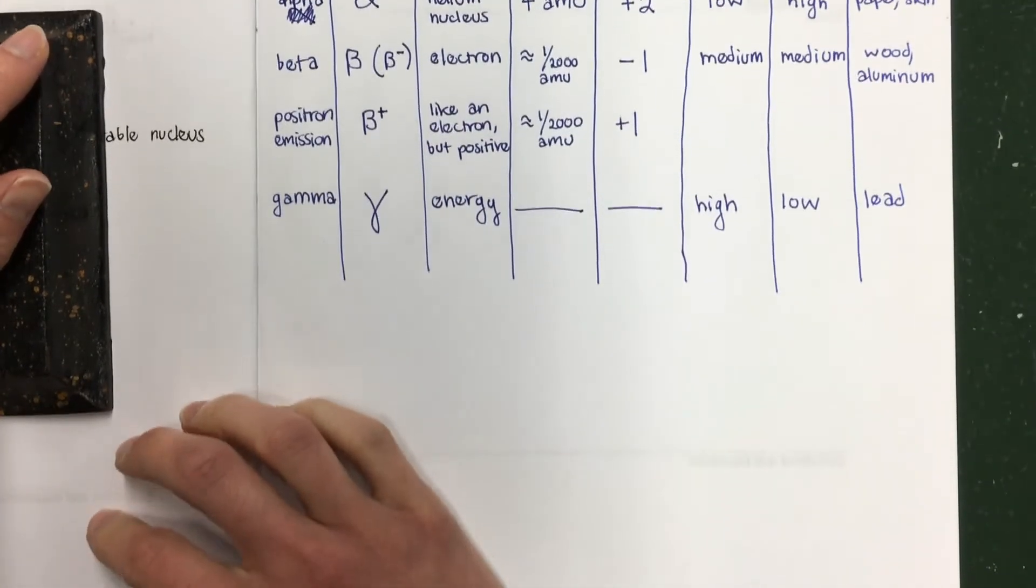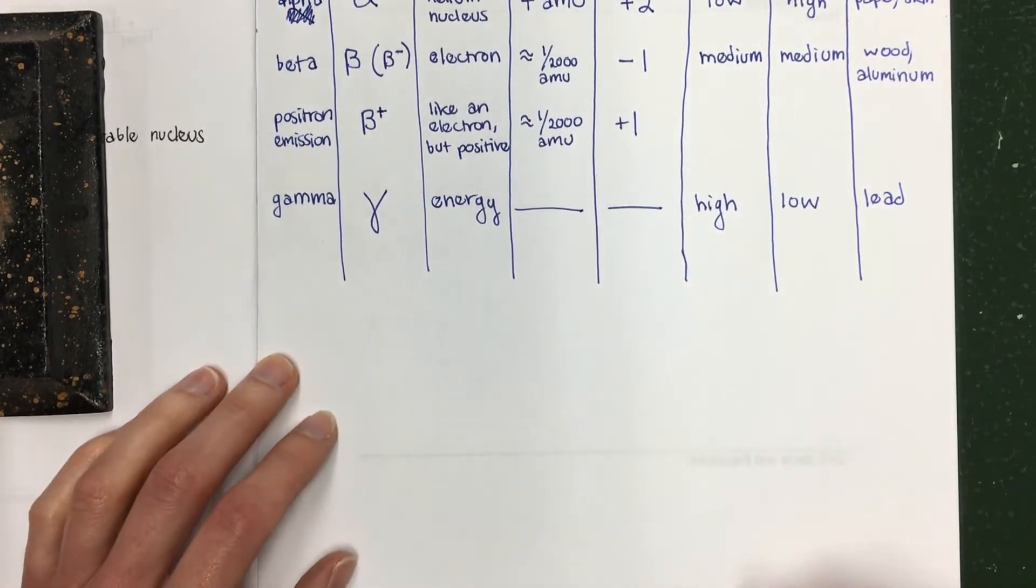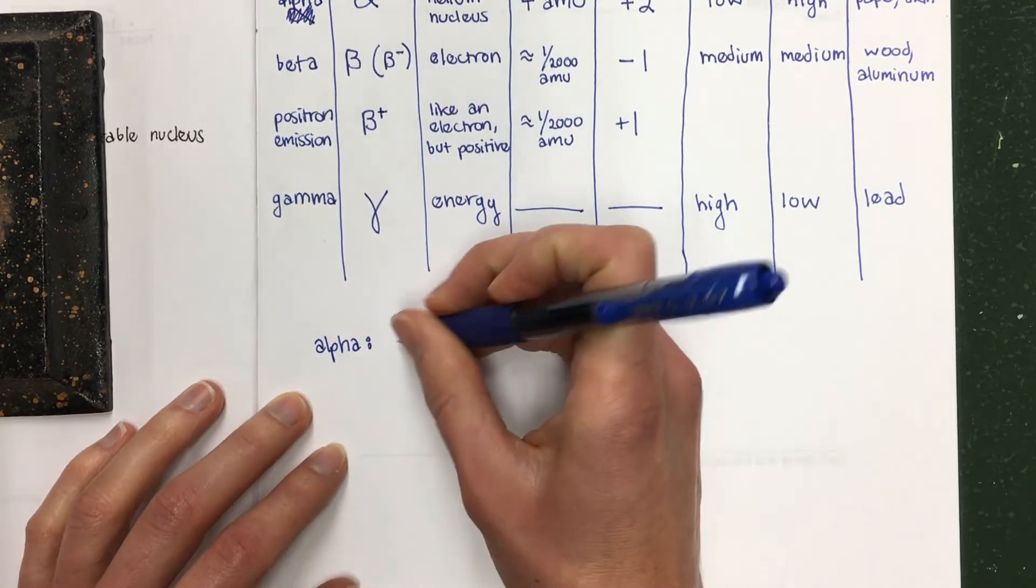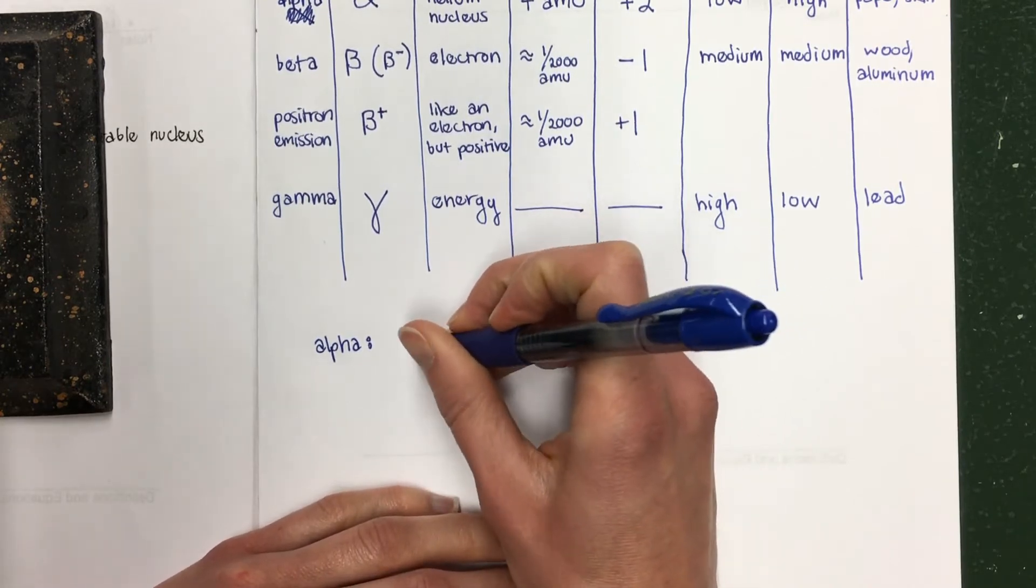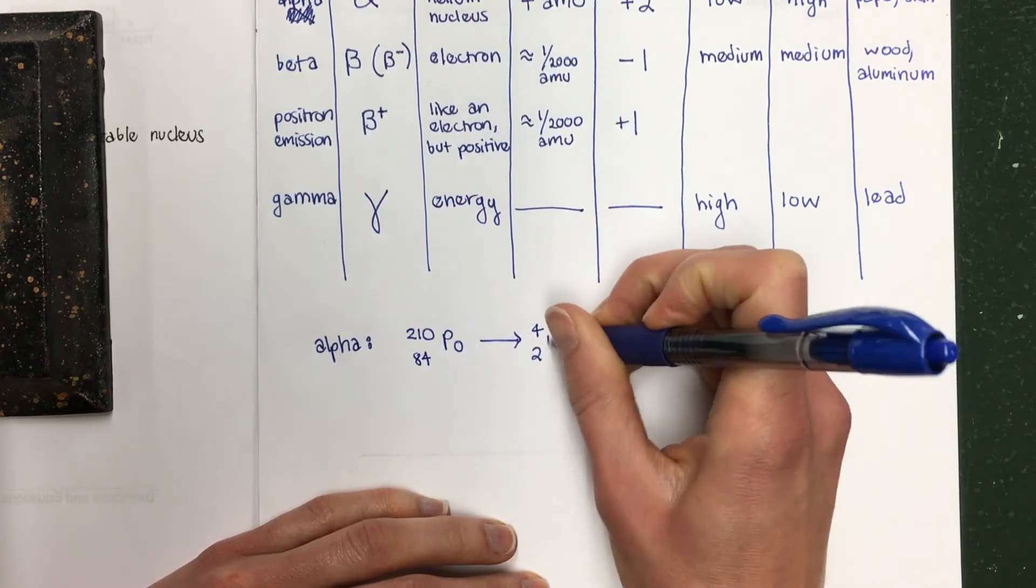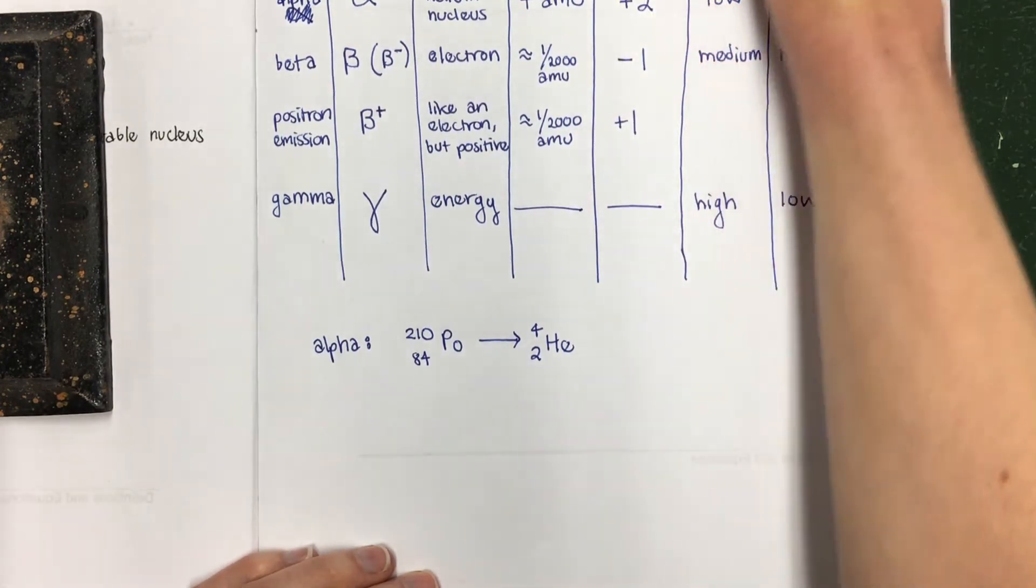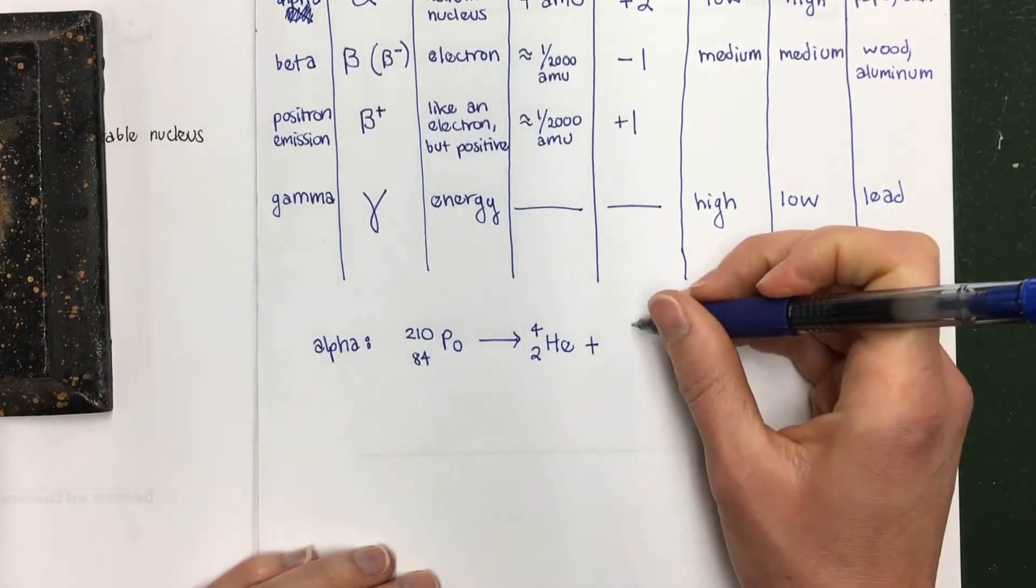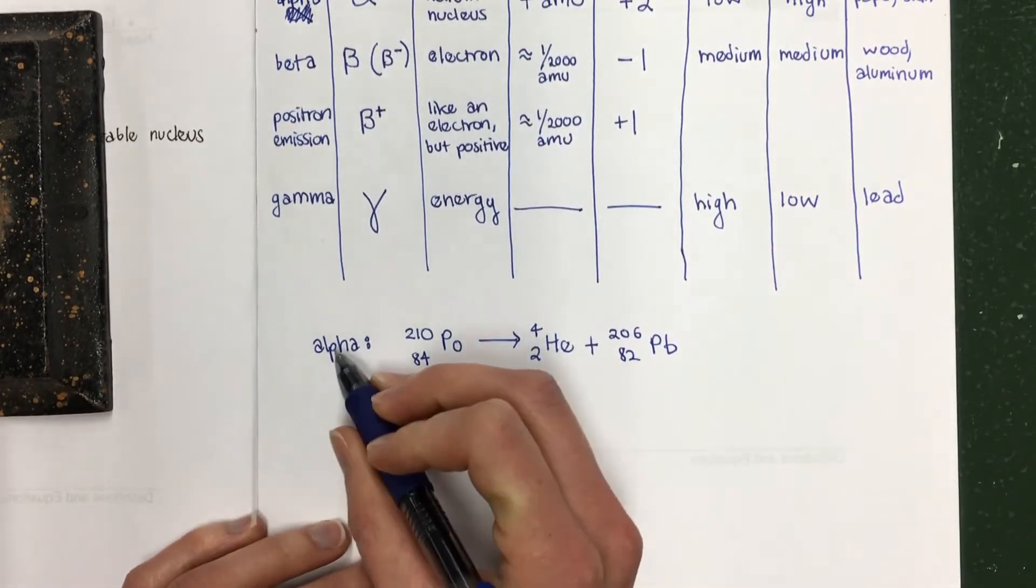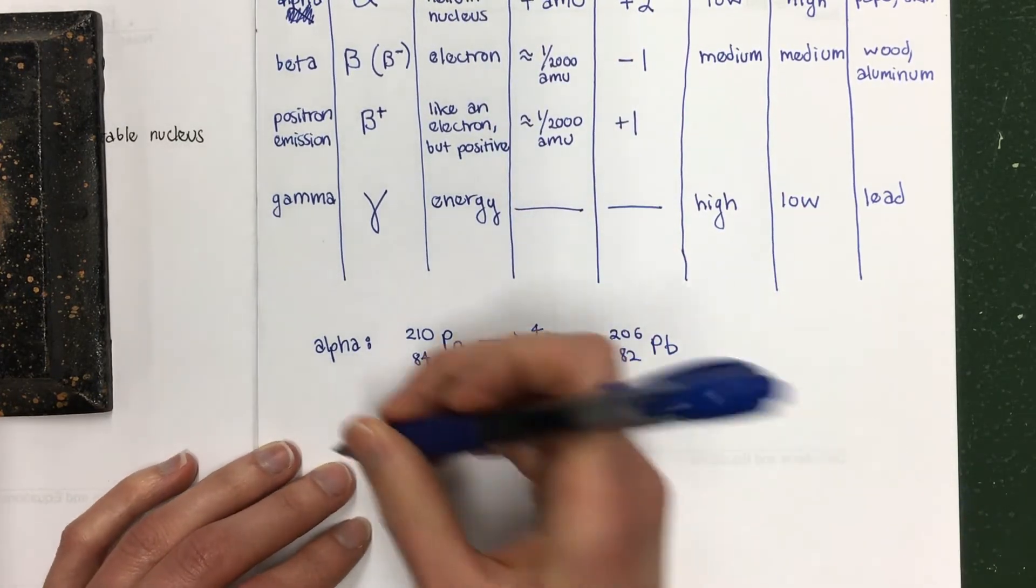I want to show you some nuclear equations of what these different types of decay look like. So alpha decay, an example of that would be, here's polonium-210. And if you see one element breaking into helium and another element, so in this case lead, that's alpha decay because a helium nucleus is an alpha particle. So that's what alpha decay looks like.